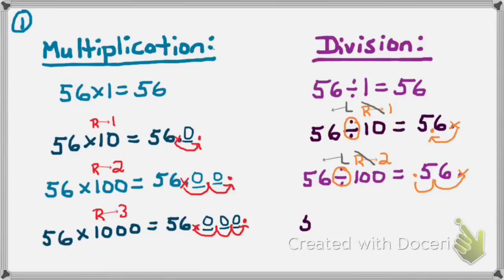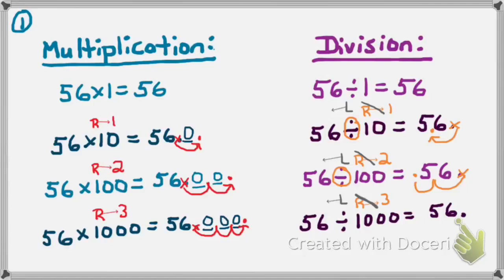What happens if we have 56 divided by 1,000? Following the same format: 1,000 is a power of 10 number, it's greater than 1, so greater means I move my decimal to the right three places. But this isn't multiplication — it's the opposite, which is division. For division, I move my decimal in the opposite direction, to the left three places. I write down 56, remove the invisibility cloak, and move it three places to the left, adding a place value zero. So 56 divided by 1,000 equals 56 thousandths. Division is the opposite of multiplication — I do the same thing, except I move my decimal in the opposite direction.